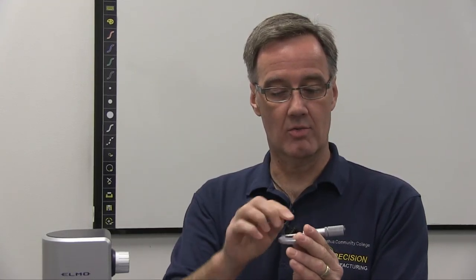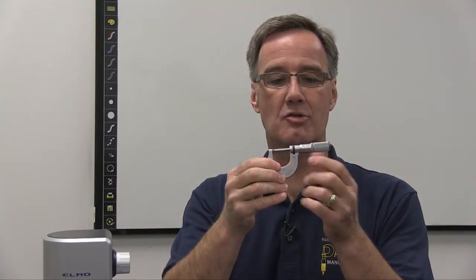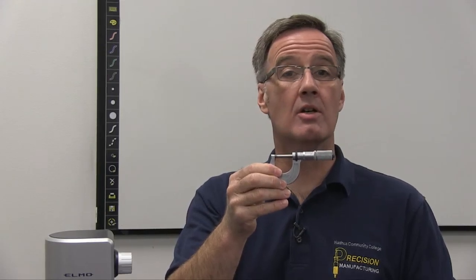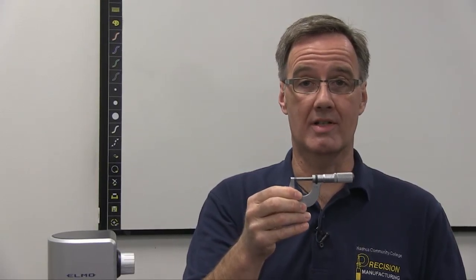And you're going to confirm that this micrometer zeros out. So we're looking at the horizontal line and those two zero marks line up. You know that this micrometer is set to go.